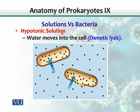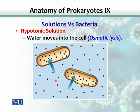A hypotonic solution is one where the salt concentration is greater inside the cell and the osmotic pressure is higher inside than outside. The cell acts like the cellophane bag from the previous example — water molecules are attracted into the cell due to the higher internal osmotic pressure. As water moves in, the cell would burst, which is called osmotic lysis.